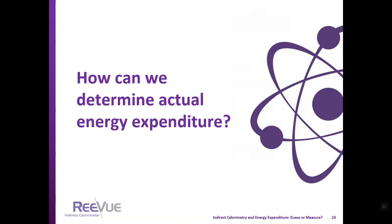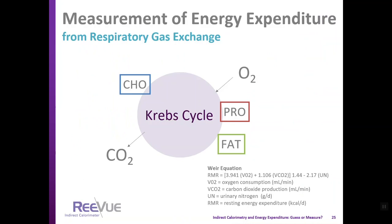Given the many problems with prediction equations, how can we determine actual energy expenditure? Energy expenditure can be measured from respiratory gas exchange. Oxygen is consumed in every energy-producing reaction, CO2 is produced, and this occurs in the Krebs cycle. If we can determine the actual oxygen consumption (VO2) and CO2 production (VCO2), then we will know the number of calories this patient requires. The Weir equation is used to plug in these measured numbers, and it also allows calculation of respiratory quotient.